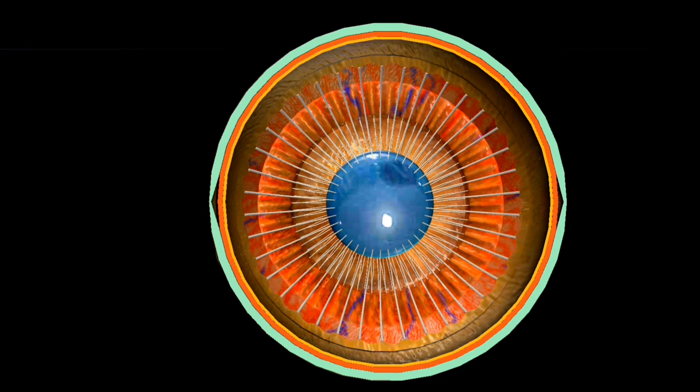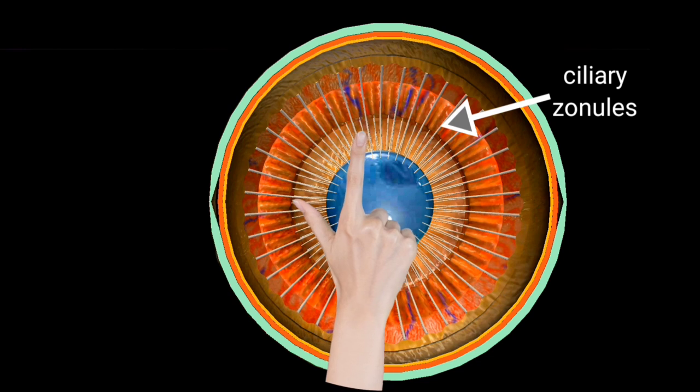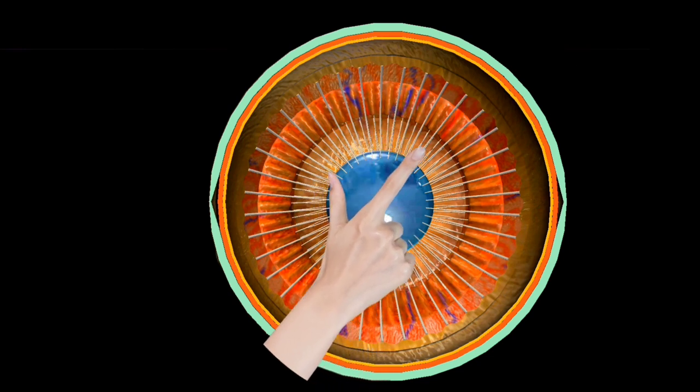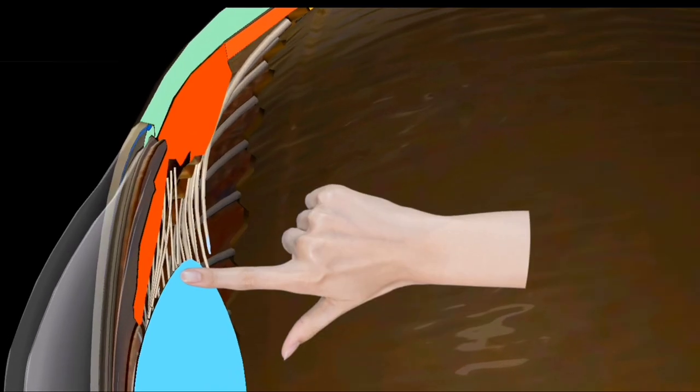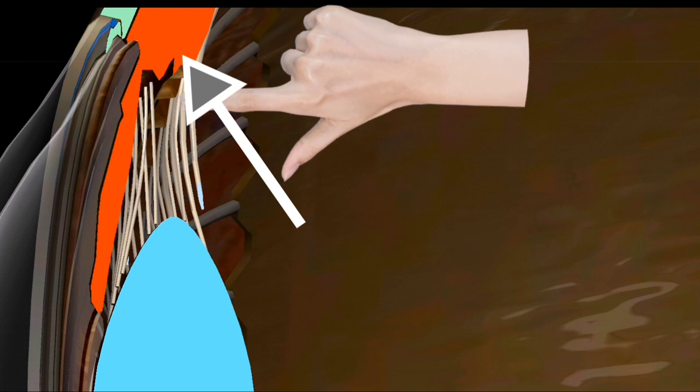How is the lens suspended at its place? The equator of the lens is surrounded by ciliary zonules or called suspensory ligaments which has one end attached to the lens in complete 360 degree circumference and the other end is attached to the ciliary processes of ciliary body.